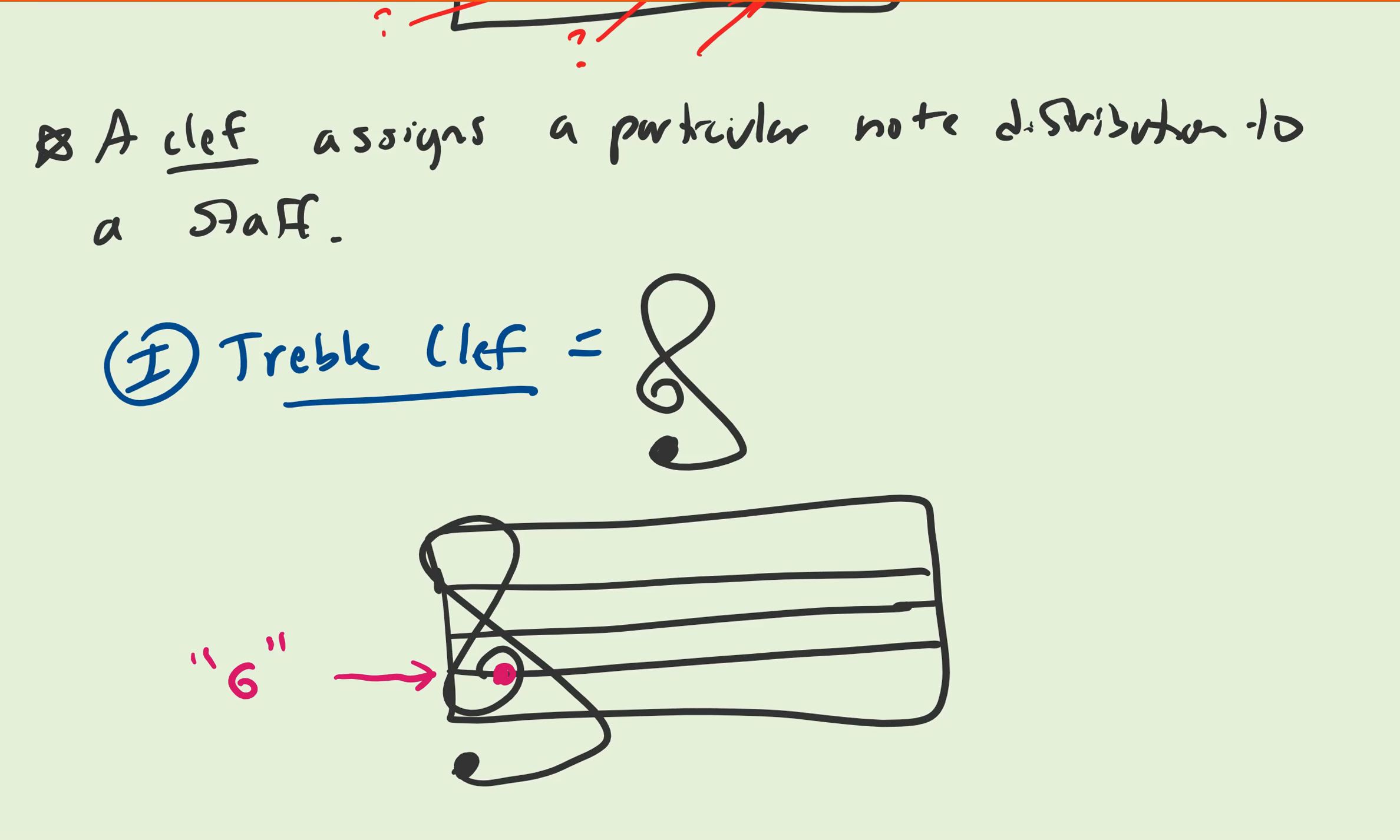The second type of clef that is used is what is called a bass clef. A bass clef, in terms of design, usually has a closed circle, loops down, and then has two lines that are pretty much symmetric with respect to that dot.